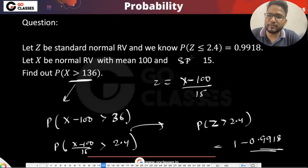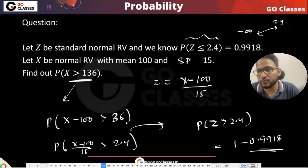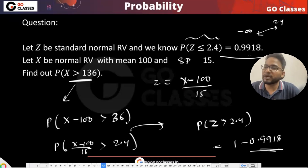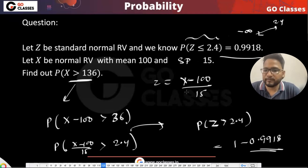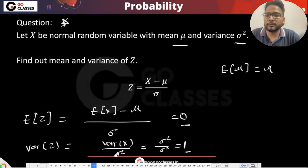There is a complicated PDF formula for the normal distribution, but we do not need it. We just need to convert any random variable X to Z. They will give us a particular value — for example, Z equals 2.4 — and they will not give us the full table. What we need to do is convert X to Z using Z = (X − mu) / sigma, where mu is the expectation of X and sigma is the standard deviation.